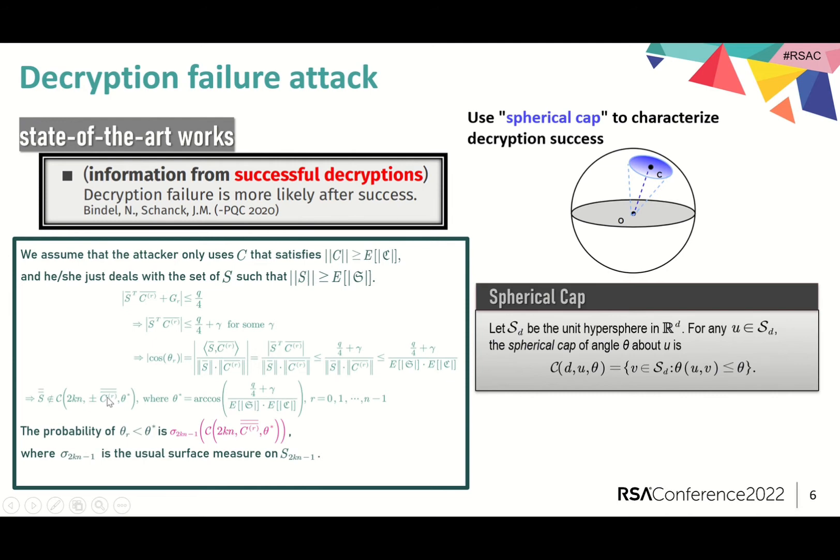Then, the probability of theta_r being smaller than theta star can be measured by the usual surface measure on S_{2kn-1}, and this probability will be regarded as a proportion of keys that can be excluded by a single cap.